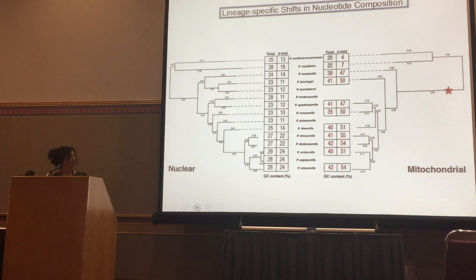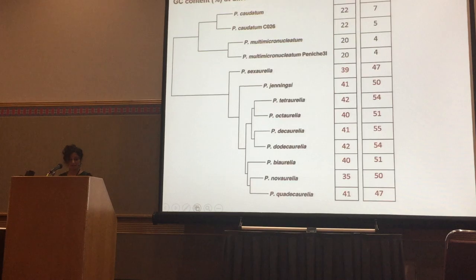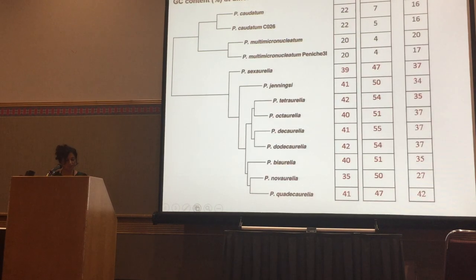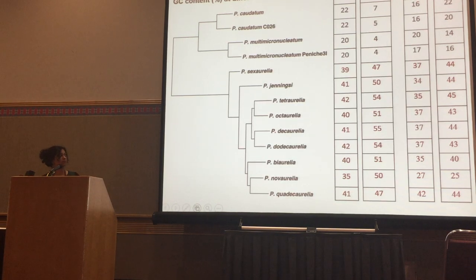If selection for codon usage bias were the main reason for changes in GC content, you shouldn't see this in intergenic and tRNA regions. When we do look at intergenic and tRNA genes, we continue to find this shift in GC content, suggesting that perhaps mutation is playing a role in these changes.